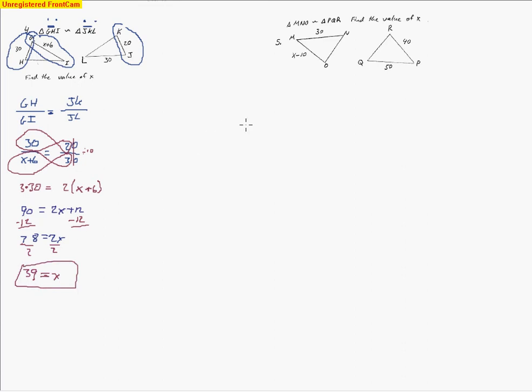Looking at the next one, same sort of thing. It's asking us to find the value of x. So let's start with the sides we know. We know MO and we also know MN. So let's write those down.